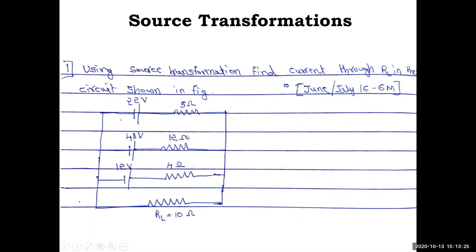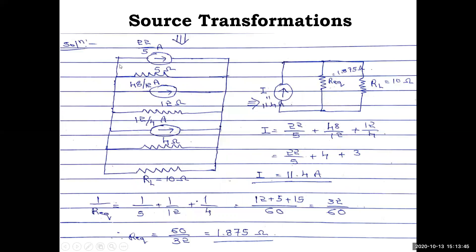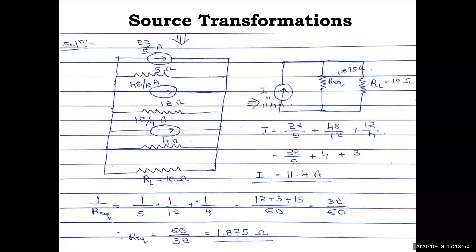We previously discussed the formula: I = V/R. So for the first branch, with 22 volts and 5 ohm, the equivalent current source is 22/5 amps, and the resistance RS equals RP, so 5 ohm remains as it is. We will similarly convert the remaining two branches.